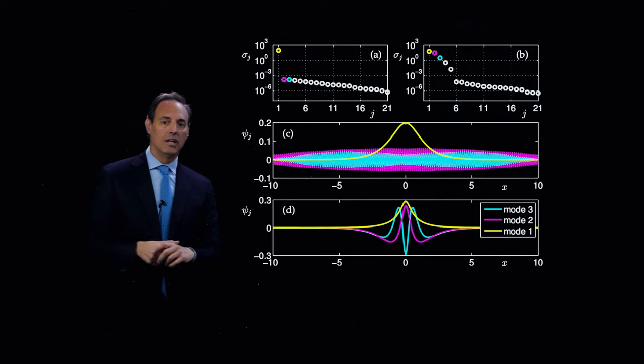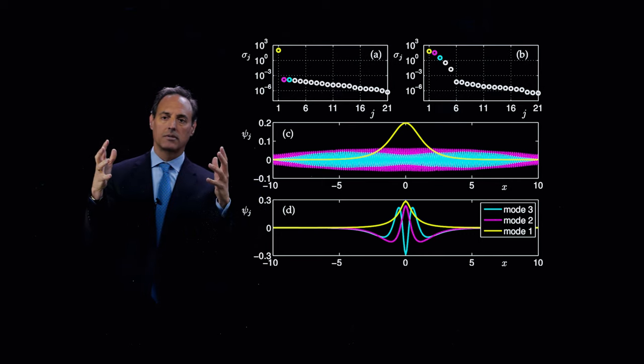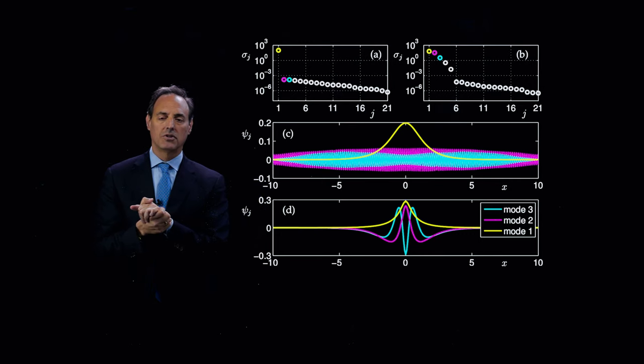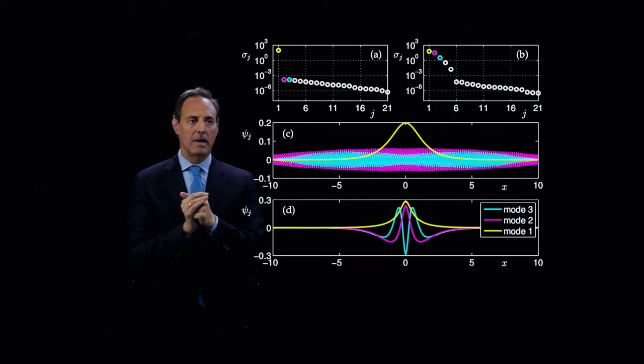So what we can do is we can take that data, put them in a snapshot matrix, SVD. This is exactly what we did in the last lecture. You just take this, look for the low dimensional embedding.